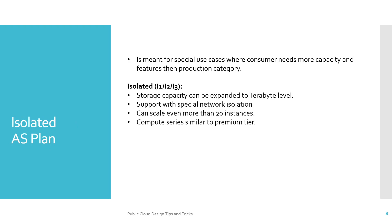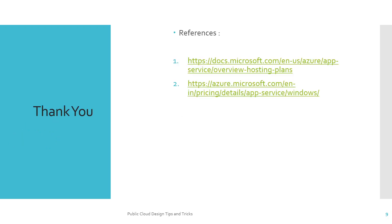The special App Service Plan is the Isolated App Service Plan, meant for special use cases where consumers need more capacity and features than the Production category. Isolated comes with I1, I2, and I3 instances, storage capacity that can extend to the terabyte level, special network isolation capability, and can scale beyond 20 instances. The compute series is similar to Premium.